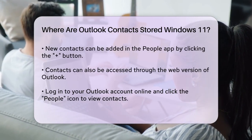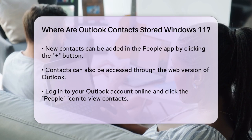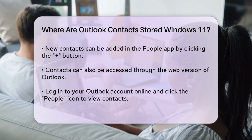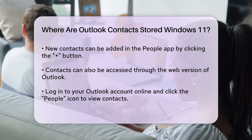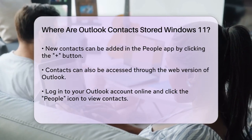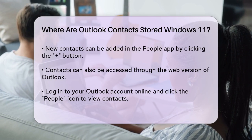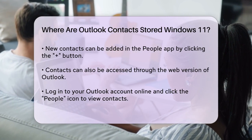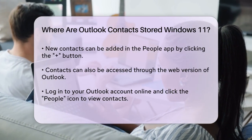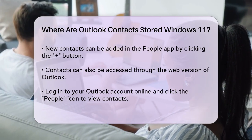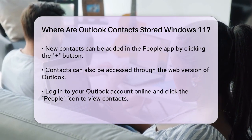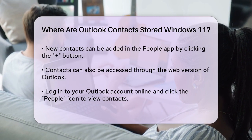Another way to access your contacts is through the web version of Outlook. Go to the Outlook website, log in to your account, and click on the People icon in the bottom left corner of the screen. This will show you all your contacts.